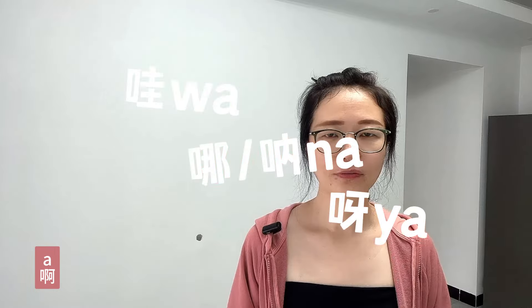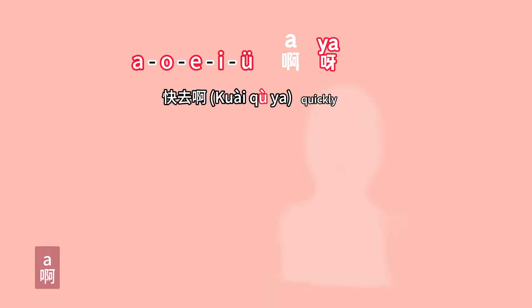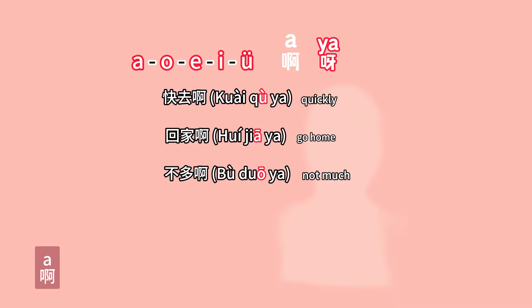啊 as a 语气词 often changes sound based on the preceding phonetic endings. The most common changes are 哇, 哪, 呀. If the preceding word ends with 啊, 欧, 鹅, 啊 is pronounced as 呀. Such as: 快去呀, 回家呀, 不多呀, 可爱呀.